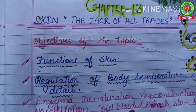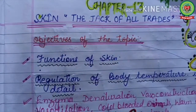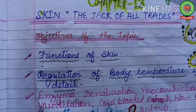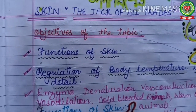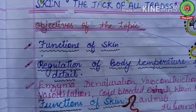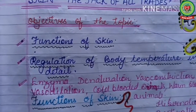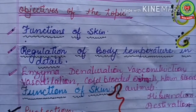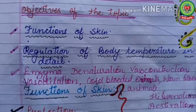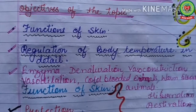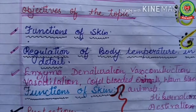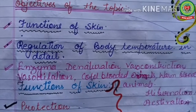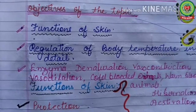Before starting the lecture, I would like to discuss the various objectives of the topic. We will discuss various functions of skin, regulation of body temperature in detail, and various terms: enzymes, denaturation, vasoconstriction, vasodilation, cold-blooded animals, warm-blooded animals, hibernation, and estivation.